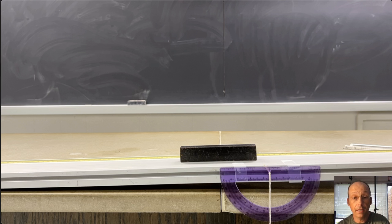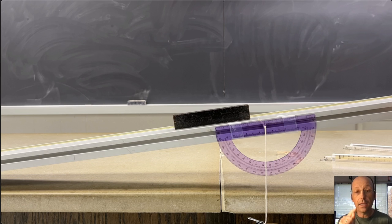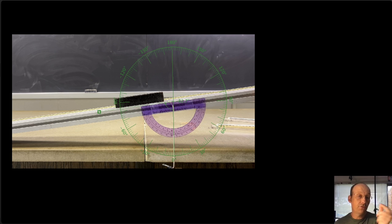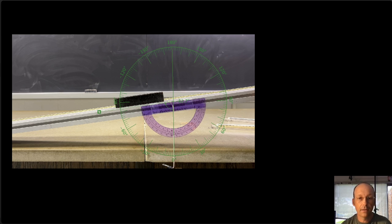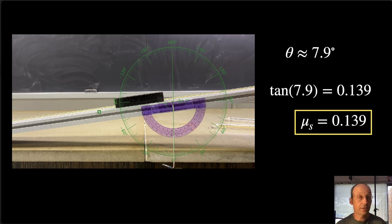Here's my inclined plane with a string attached to a mass so I know the vertical direction. I raise the plane very slowly until the block just starts to slide, then bring it back and repeat for multiple readings. I used tracker video analysis to measure the angle between the vertical and the track, then found θ as the complement. I get θ ≈ 7.9 degrees. Tangent of 7.9° is 0.139, which is my coefficient of friction.